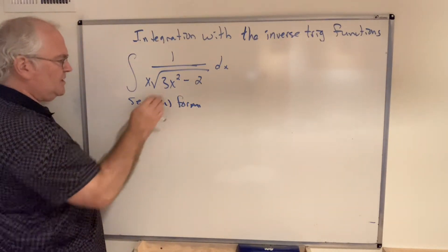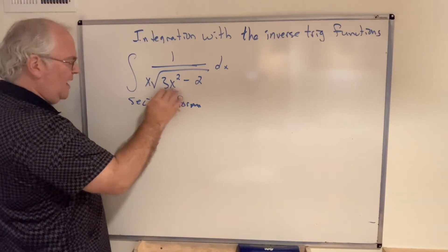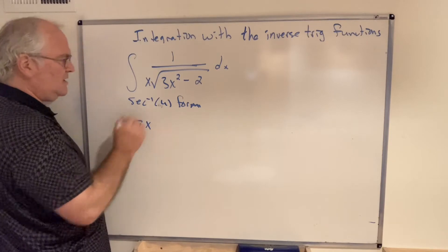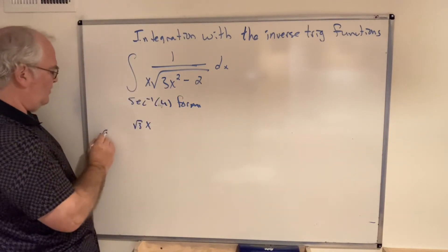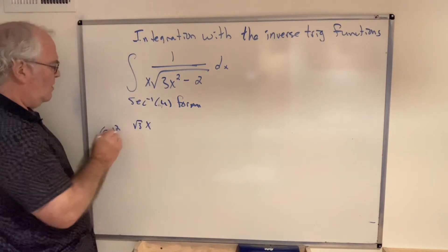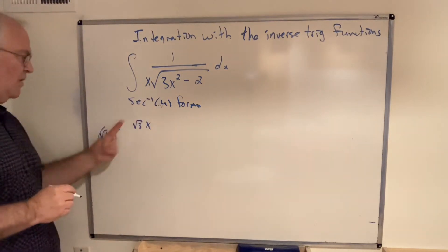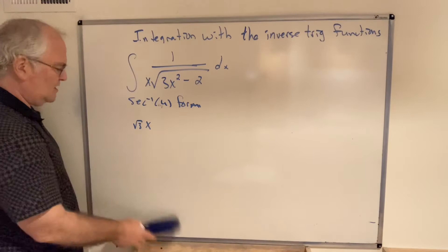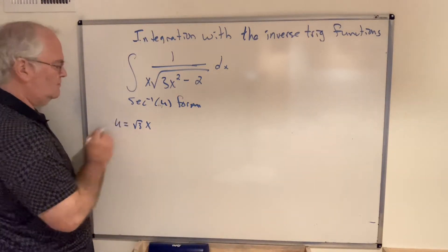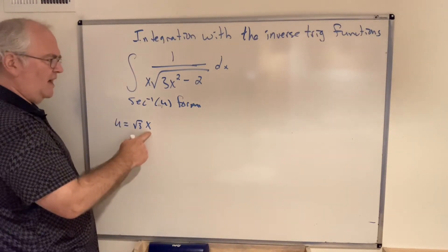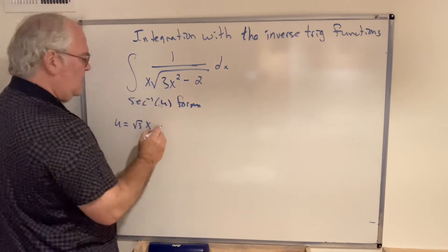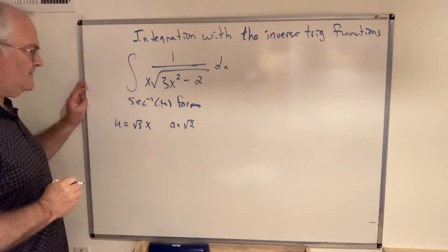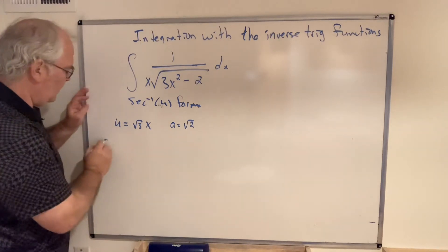Let's see if we can make it fit. So what is getting squared here is not 3x. What's getting squared here is the square root of 3 times x. Remember this is √3 times x quantity squared. That's what's actually getting squared here. So we're going to have u equal to that expression: √3 times x, because that's what's getting squared. And then a is the square root of 2. That's what's getting squared.